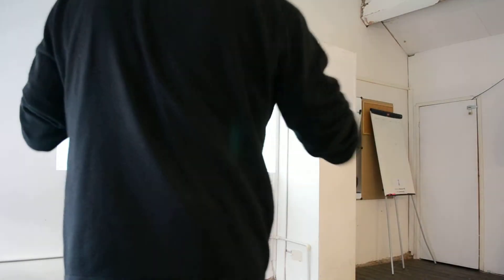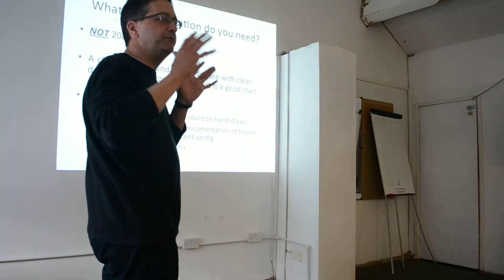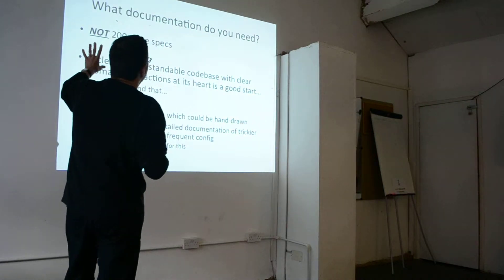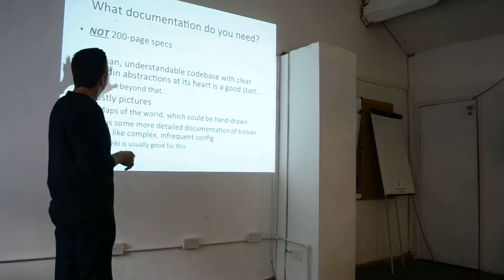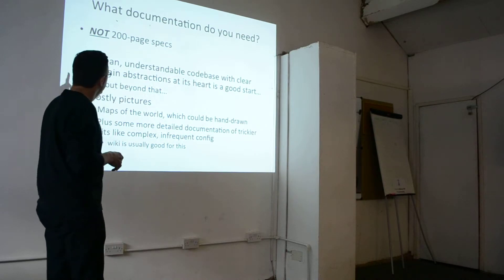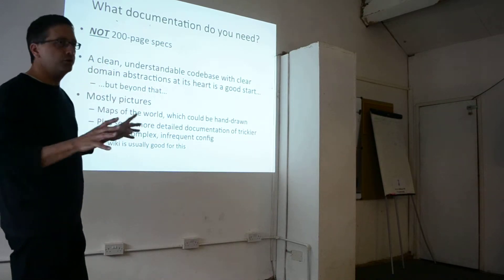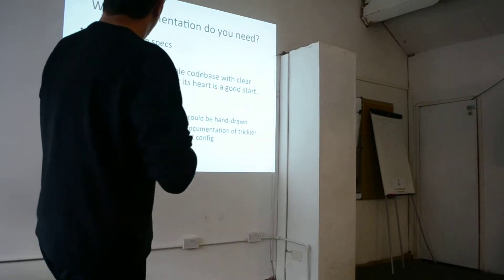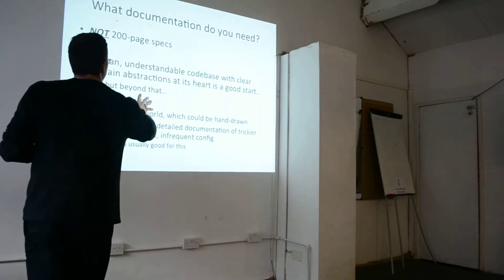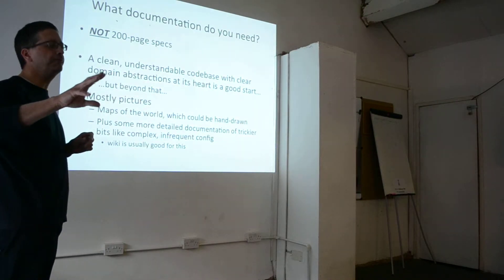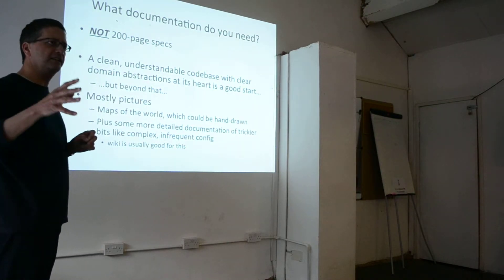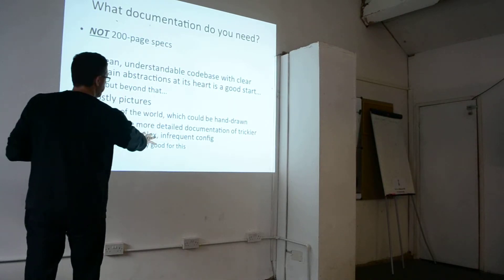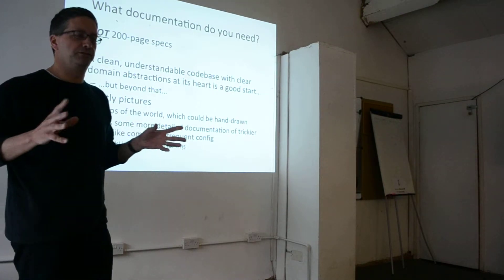So what documentation do you need? You do not need 200-page specs. A clean, understandable codebase with clear domain abstractions at its heart is a good start. But beyond that, I would say mostly pictures — maps of the world, which could be hand-drawn on flip chart sheets. Plus some more detailed documentation for trickier things, like complex config you don't do very frequently, or that git command you can never remember. A wiki is usually good for this.